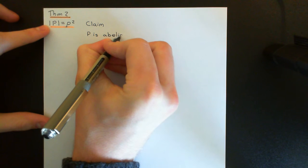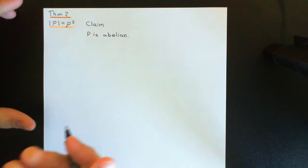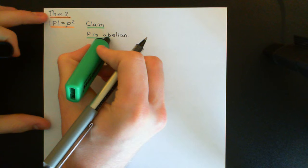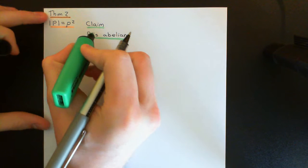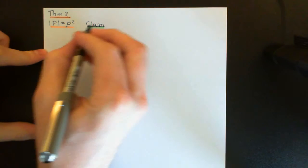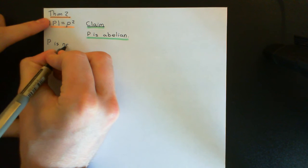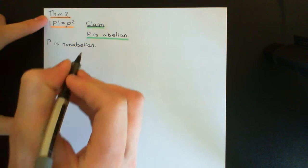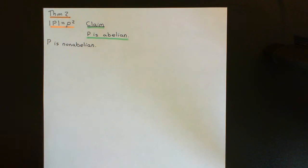How are we going to prove this? We're going to use the prerequisite theorem, which works for groups of order P squared because it works for all P groups. We're going to do it by proof by contradiction. So we assume that P is non-abelian, and we're going to arrive at a contradiction — specifically, that P actually is abelian.